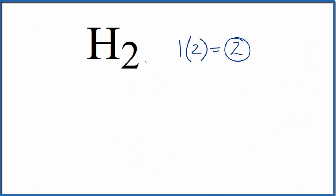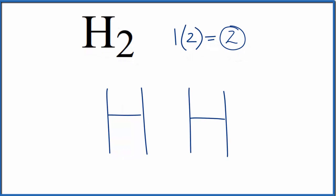First, we'll write the element symbols for hydrogen. We have two hydrogens. Next, we'll place a pair of electrons between these two hydrogen atoms to form a chemical bond. And at this point, we've used all of our valence electrons. We only have two.